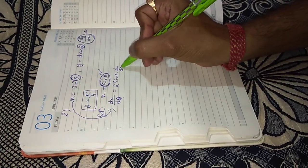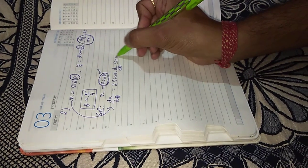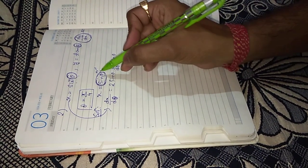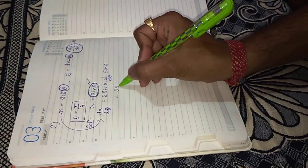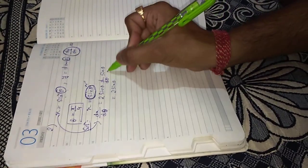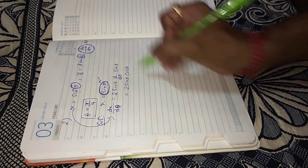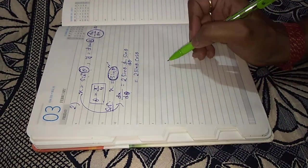Into d by d theta of sin theta. Since we are applying chain rule, we have to differentiate sin theta again. 2 sin theta into d by d theta of sin theta is cos theta. So this is dx by d theta.